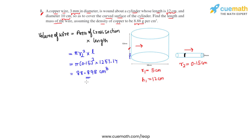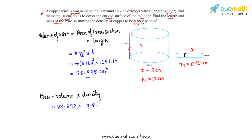Now the next part is to find its mass. Mass equals volume times density, so the volume is 88.898 cm³ and its density as given in the question is 8.88 grams per centimeter cube. Multiplying these two numbers we get the product as 789.41 grams. This is the mass of the copper wire used in this question.